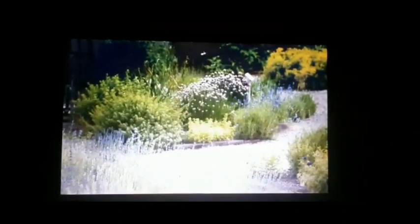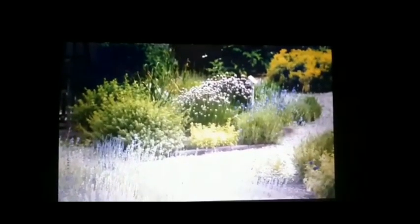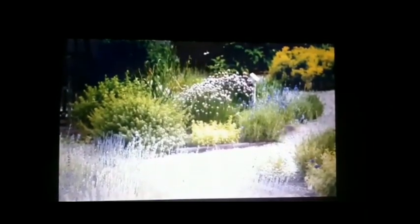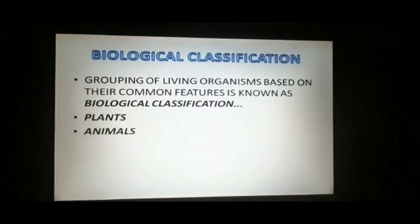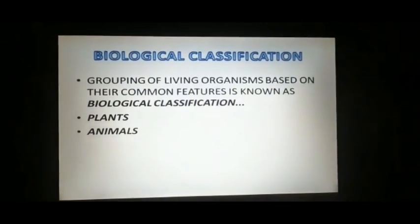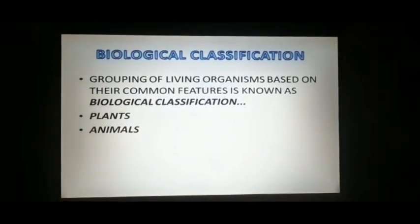We see various plants and animals around us. It is estimated that about 8.7 million species of living organisms have been identified and named till now. However, many scientists believe that only a small portion of the total species existing on earth has been identified. In order to know about the behavior and relationship among organisms, biologists have classified them into two broad groups. The grouping of living organisms based on their common features is known as biological classification — grouping organisms into two types: plants and animals.